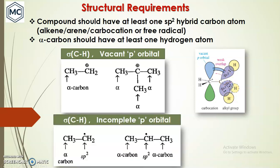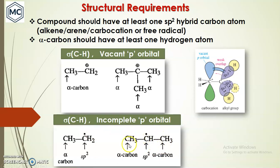The third type of interaction is where the sigma C–H bond interacts with an incomplete p orbital, that is, a radical. The alpha hydrogen can delocalize with this radical. The second example has 6 alpha hydrogen atoms, while the first case has 3 alpha hydrogen atoms.